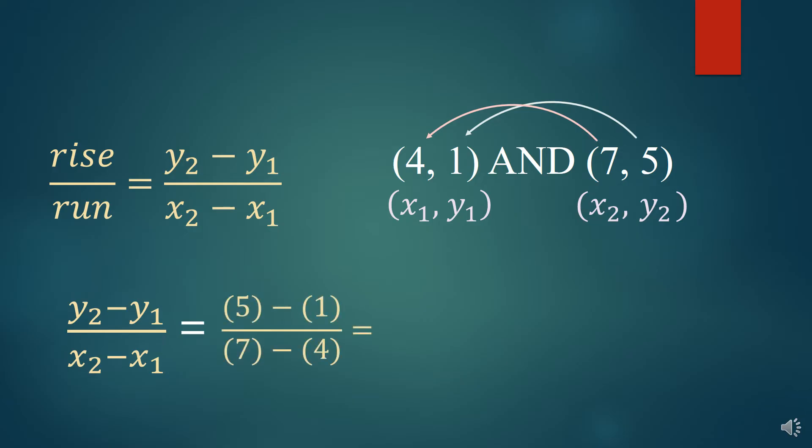Now, you'll notice that I put the numbers in parentheses. And it's a good habit to get into anytime you're substituting a number. But it's going to really help you on this. Now, 5 minus 1 is 4 and 7 minus 4 is 3. And so 4 over 3 is your slope. It's that easy.